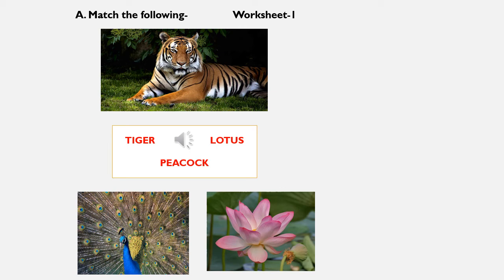Now you have to solve the worksheets. In this worksheet, you have to match — match the following. The names are given in the box and pictures are given. You have to match the picture with the correct name. The names are tiger, lotus, and peacock. Match tiger to tiger, lotus to lotus, and peacock to peacock.